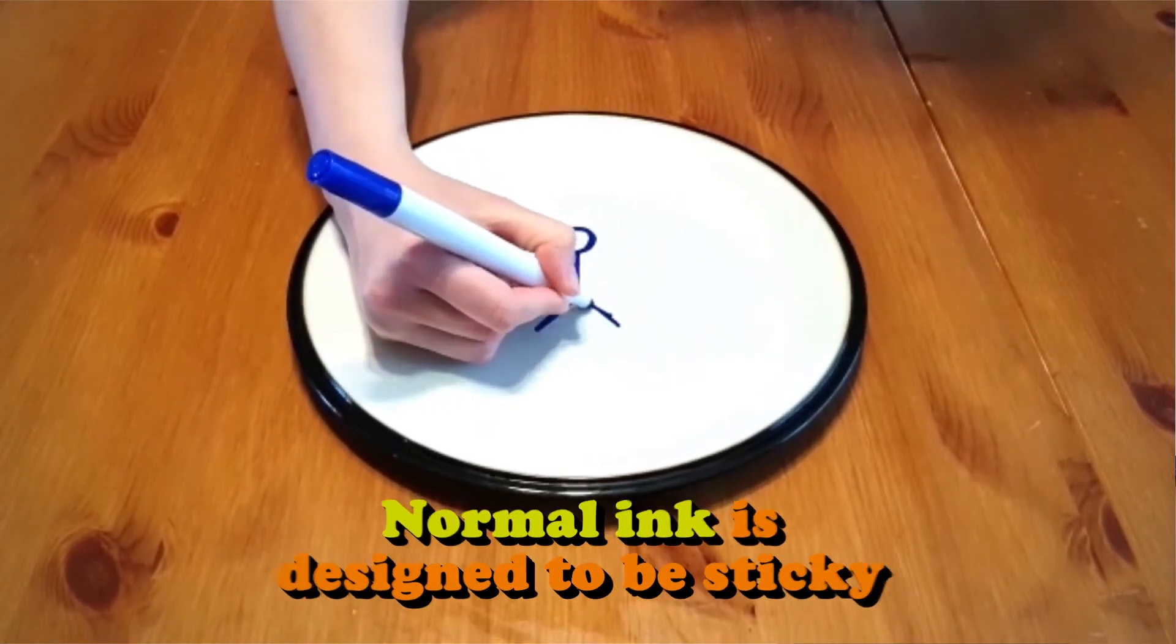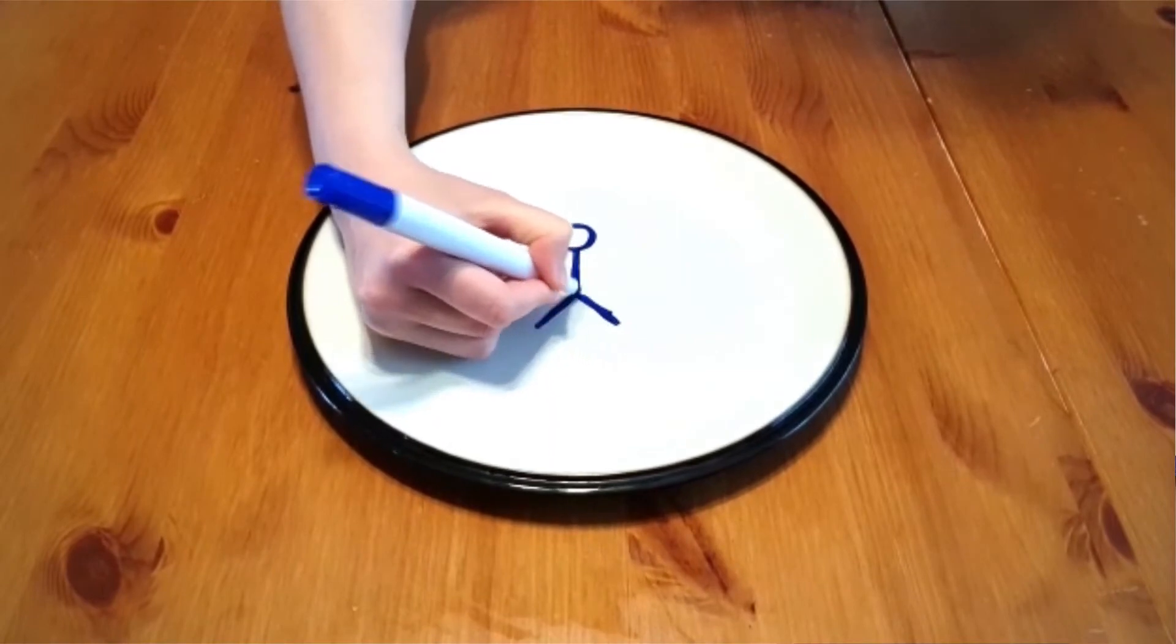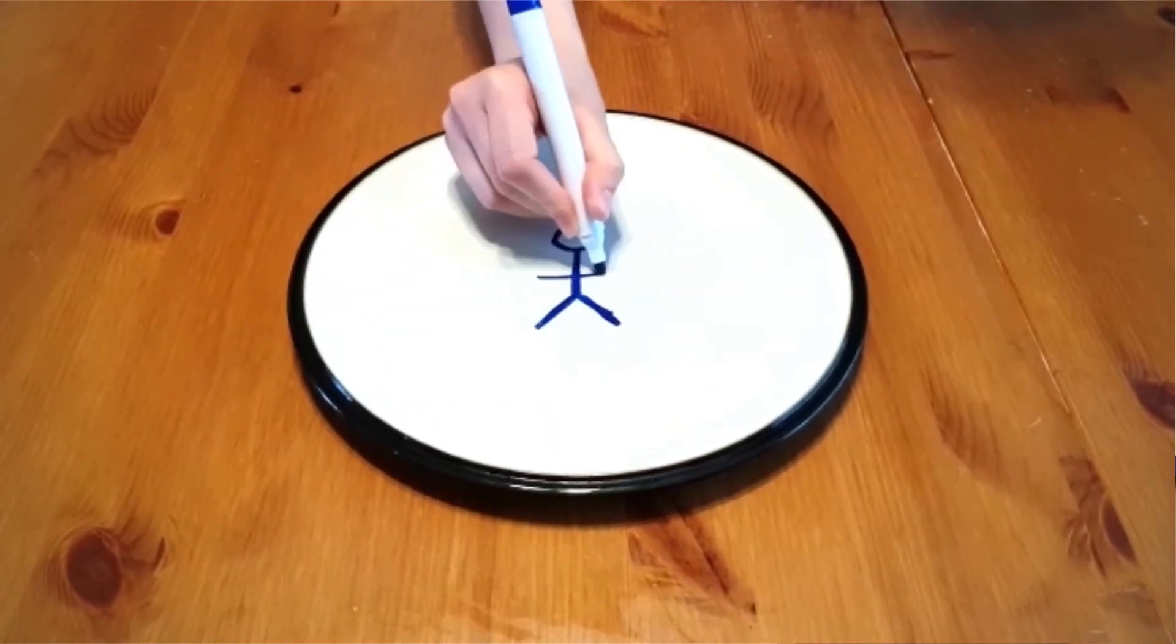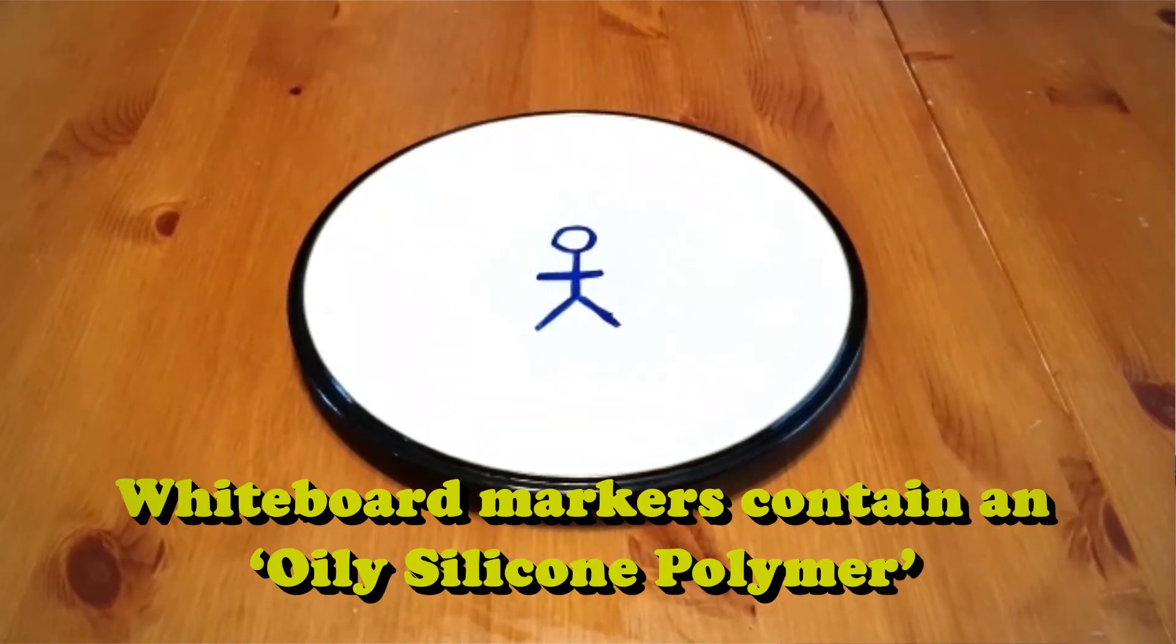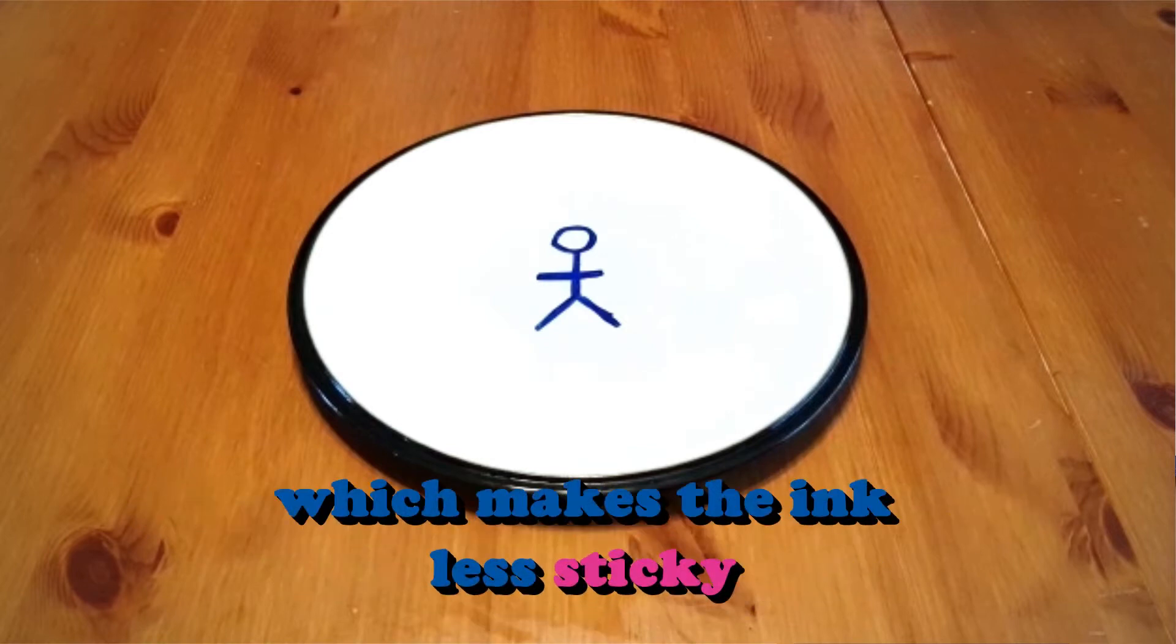What makes this experiment possible is the interesting chemistry of a whiteboard marker. They contain an oily silicone polymer which acts as a release agent, making the ink less sticky. Therefore when you draw your stick man, the ink dries as a solid drawing onto the surface.